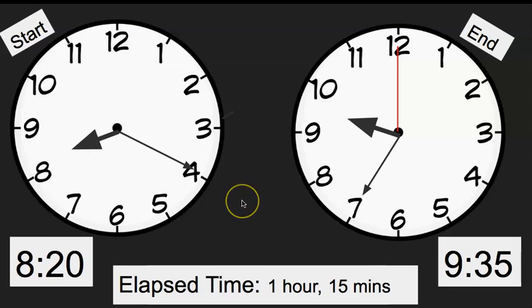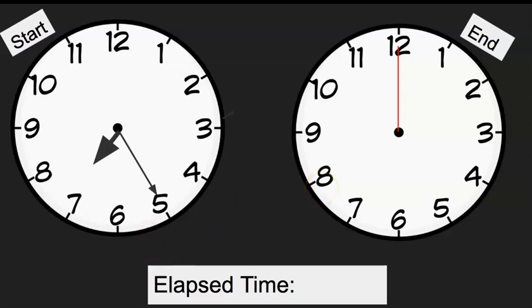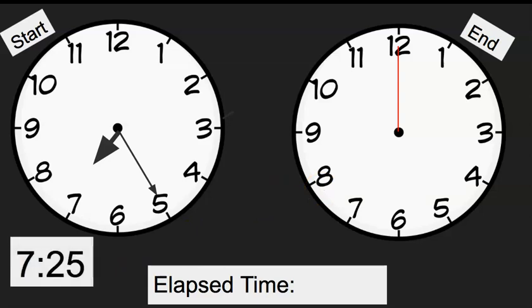Our next problem: it was time for bed. Ben started getting ready. You should have your two clocks — start time and end time — and then we're going to write our digital time. Ben started to get ready for bed at 7:25. Write the digital time underneath. It took him 25 minutes to get ready, so we know our elapsed time is 25 minutes.